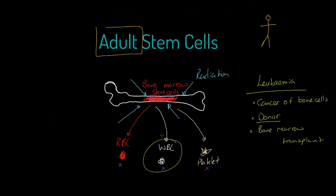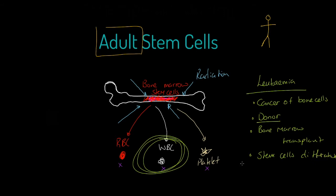The reason a good match is so important is that if the recipient starts producing white blood cells that don't fit well with their own physiology, those white blood cells could actually start attacking the body itself, which would be very serious. Once that bone marrow has been transplanted — through a large needle, by the way — the stem cells begin to differentiate again, and red blood cells, white blood cells, and platelet cells start to be produced, and the person hopefully becomes healthier again.